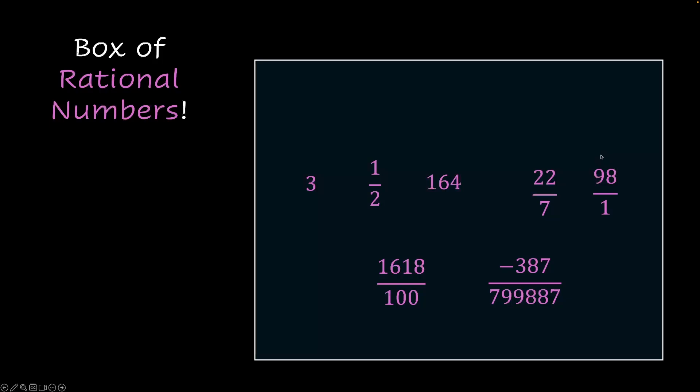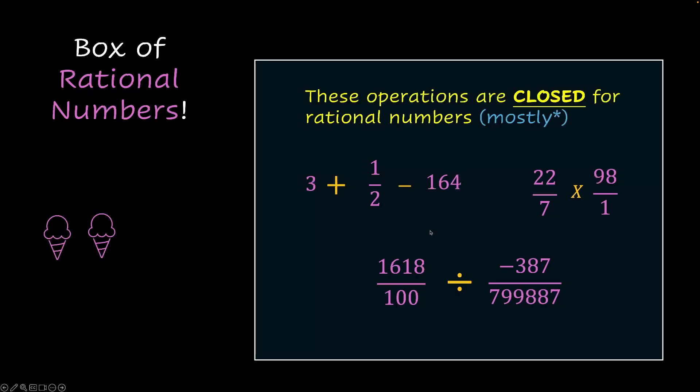Now, the more interesting part here is if we perform any operation, any mathematical operation like addition, subtraction, multiplication, or division, we still tend to get a rational number. For example, if I add these numbers or if I subtract a number or if I multiply these numbers or if I divide these numbers, we will always tend to end up with another rational number. Almost always. We'll see about that very soon. The idea here is these operations are closed for rational numbers. When you perform operations on a rational number, you always get another rational number. That's what we mean by the idea of being closed. We tend to stay within this box.